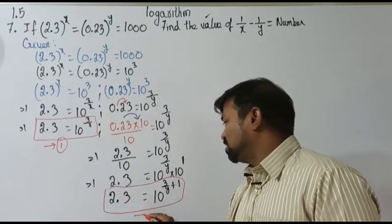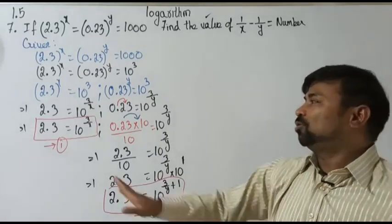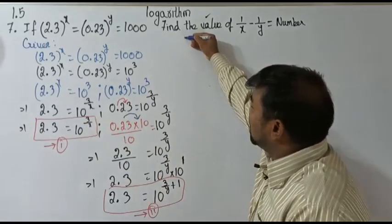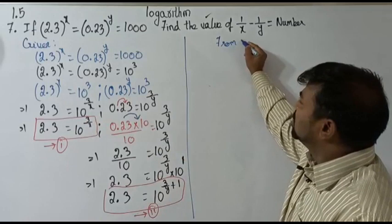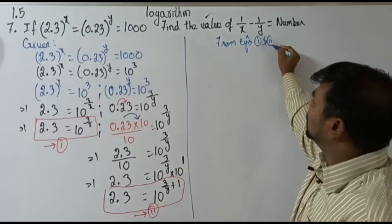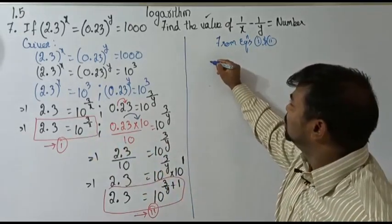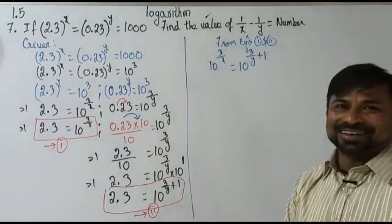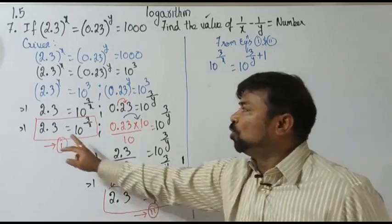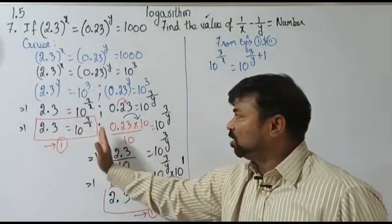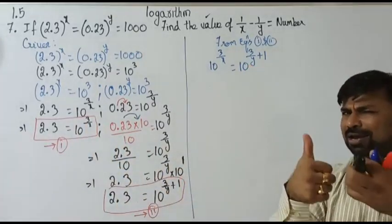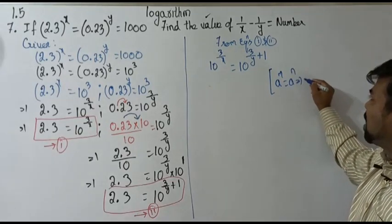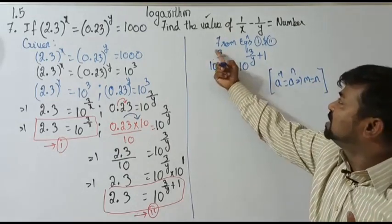From equations one and two, here also 2.3 equals something and here also 2.3 equals something — shall I equate them? Yes! So 10 to the power 3 by x equals 10 to the power (3 by y plus 1). I have eliminated 2.3 and 2.3. Now applying the rule: if a to the power m equals a to the power n, then m equals n when bases are equal. So equating only the powers: 3 by x equals 3 by y plus 1.